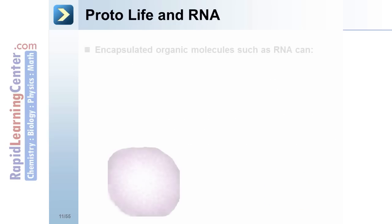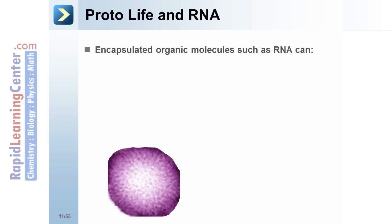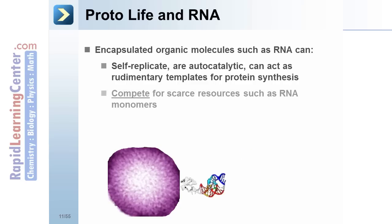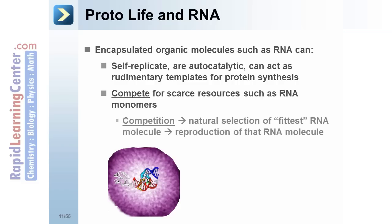Protolife and RNA: encapsulated organic molecules such as RNA can self-replicate, are autocatalytic, and can act as rudimentary templates for protein synthesis. They can compete for scarce resources such as RNA monomers — this competition drives natural selection of the fittest RNA molecule and reproduction of that RNA molecule.